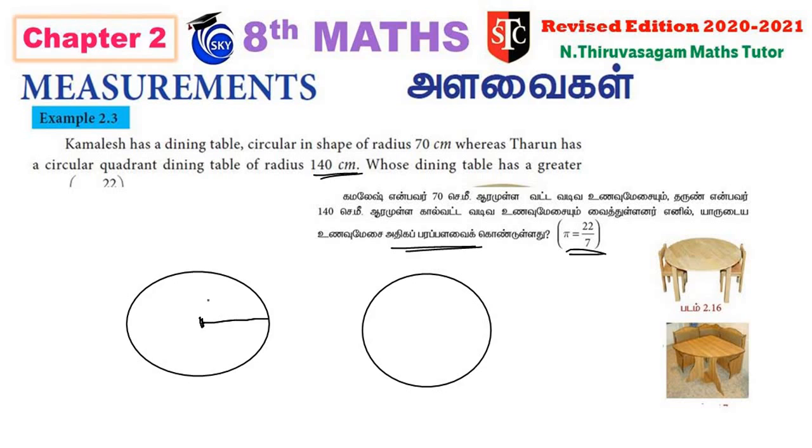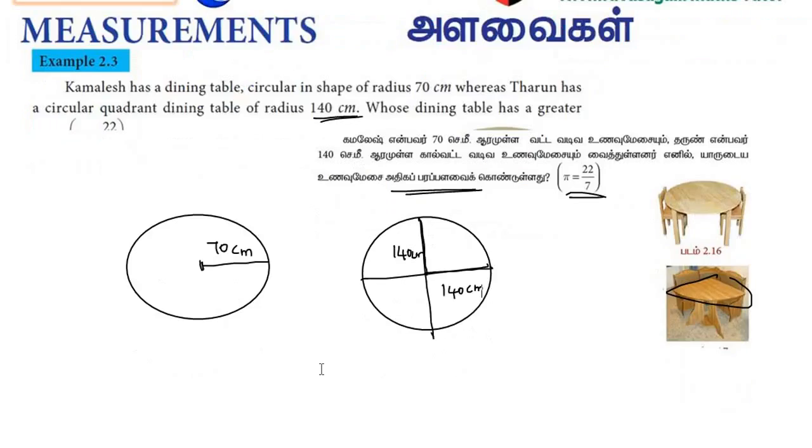This is Kamalesh's circular dining table, which is 70 cm. And this is Tharun's quadrant dining table, which is 140 cm radius. Let's find the area of each.